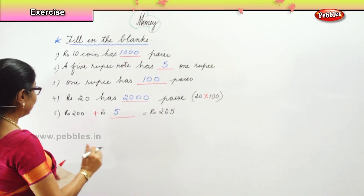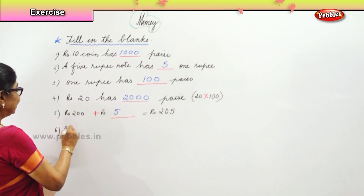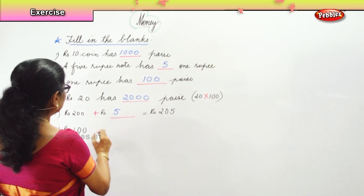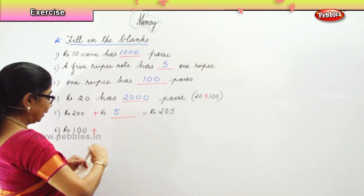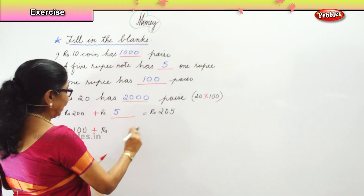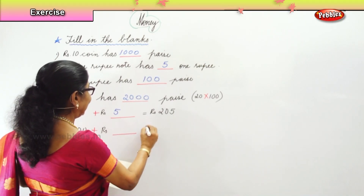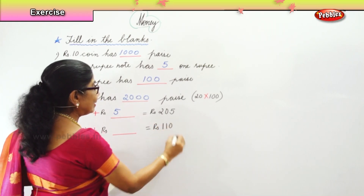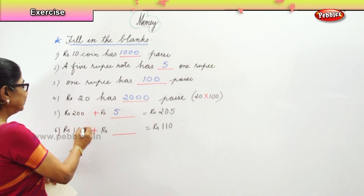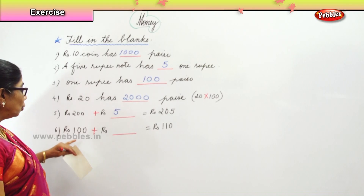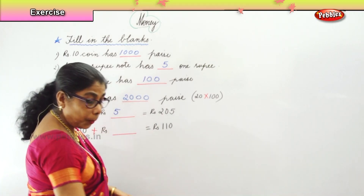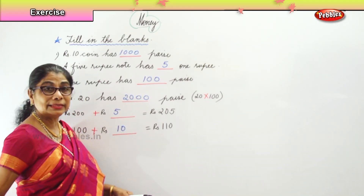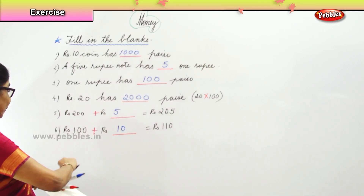Next, the 6th one: rupees 100 plus something will give you rupees 110. You have rupees 100 and the answer is 110. So rupees 100 plus rupees 10 equals rupees 110.